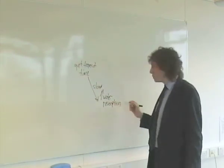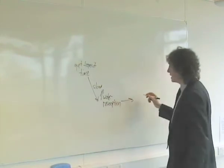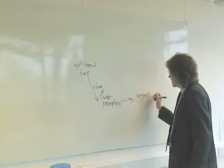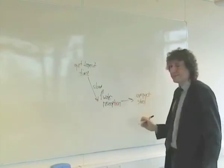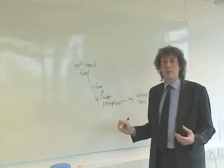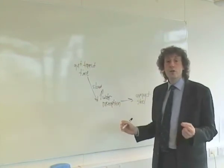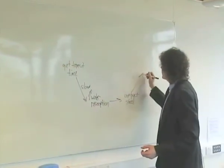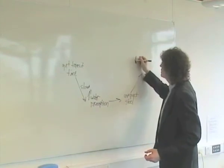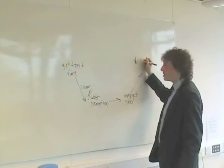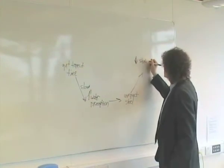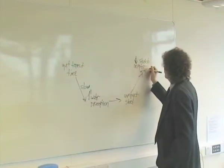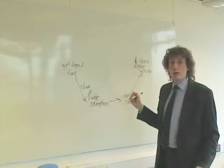This increase in water resorption will lead to a physical effect, which is very compact stool. This compact stool is ultimately the beginning of the problem of constipation. The compact stool will have an effect on the sensor — this is the beginning of our physiological response. This compact stool will lead to a decrease in the firing or activity of the stretch receptors, which are in the wall of the gut.